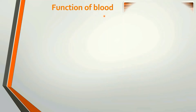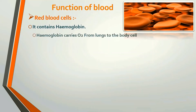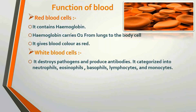We can see the function of blood. First, about red blood cells: they contain hemoglobin, which carries oxygen from the lungs to body cells and gives blood its red color. Then, white blood cells: they destroy pathogens and produce antibodies. They are categorized into neutrophils, eosinophils, basophils, lymphocytes, and monocytes.